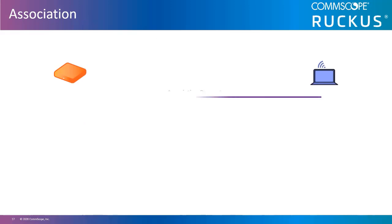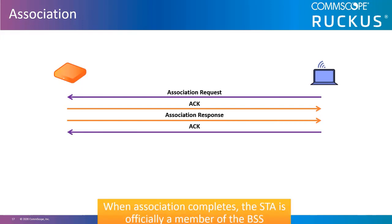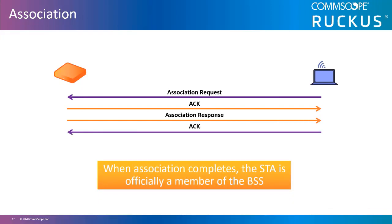Once the client passes the open system authentication process, an association request frame will be used to associate to an access point within a basic service set. The requesting station must have successfully completed the open system authentication to move the association phase forward. An association response frame signals the success or failure of the requesting station. Clients can only be associated with one access point radio at a time; a station may be open system authenticated to more than one AP, but can only be associated to a single access point.